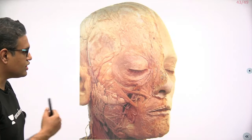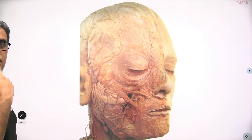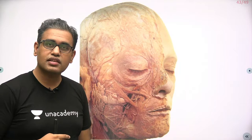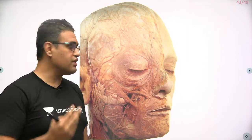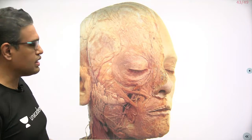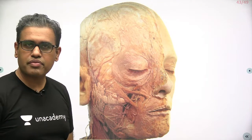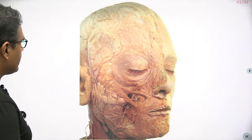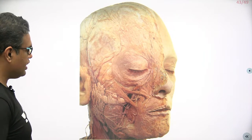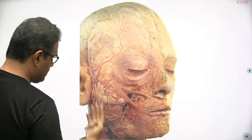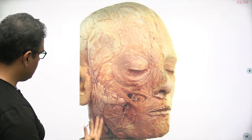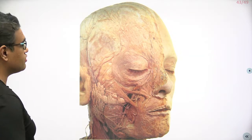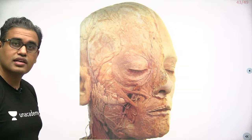Now, what is the image? The image is the facial region — a cadaveric image from the face showing various multiple parts. It is a very important image. What you are seeing includes facial muscles, masticatory muscles, parotid gland, some nerves, some vessels, and a lot of things. Let us start.